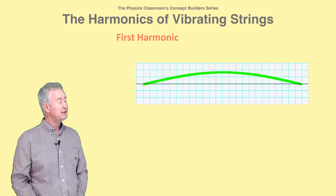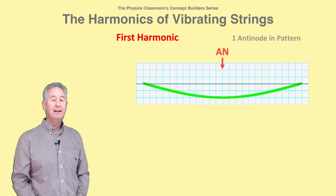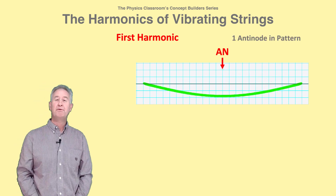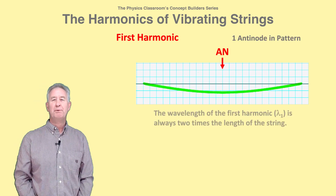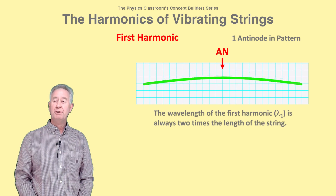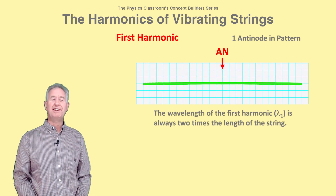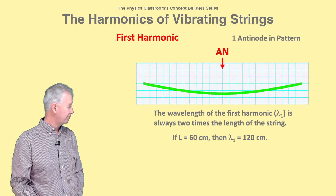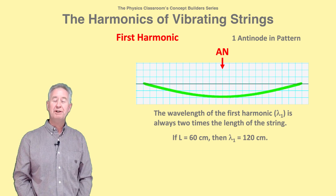This is the standing wave pattern for the first harmonic. It has one antinode and one-half wavelength in the string. The wavelength of the first harmonic is always two times the length of the string. If the string is 60 centimeters in length, then the wavelength is 120 centimeters.